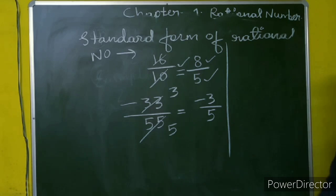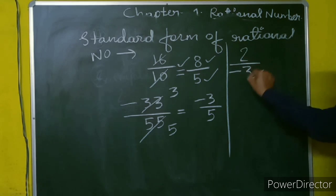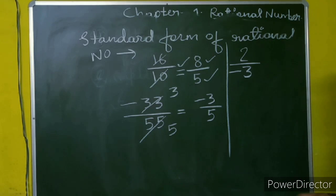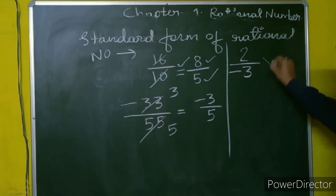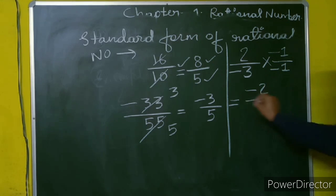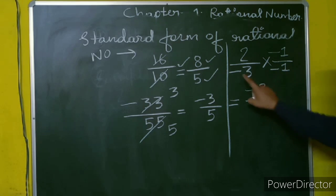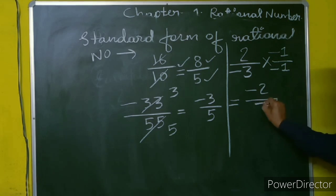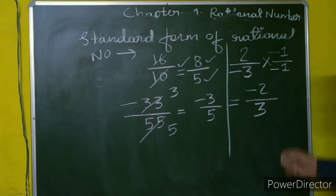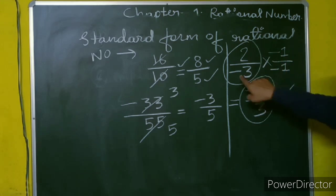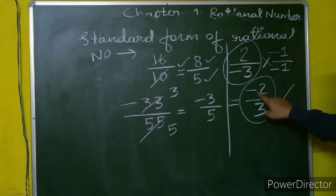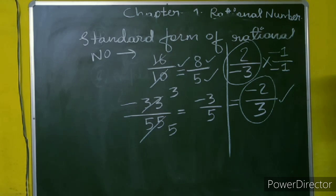Let's look at another example: 2 upon minus 3. Is it in standard form? No, 2 upon minus 3 is not in standard form because the negative sign is in the denominator. We multiply both numerator and denominator by minus 1: 2 times minus 1 gives minus 2, and minus 3 times minus 1 gives positive 3. So we get minus 2 upon 3, which is the standard form — the negative sign moves to the numerator.